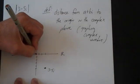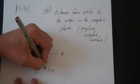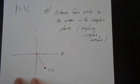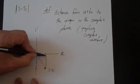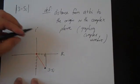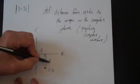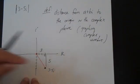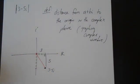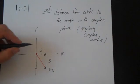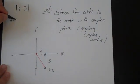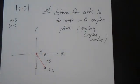Now you're going to find this distance right here. The way you find this distance is you use some geometry — you just draw a right triangle. This distance here is 3 and this distance here is 5. You can think of a as equal to 3 and b as equal to minus 5.